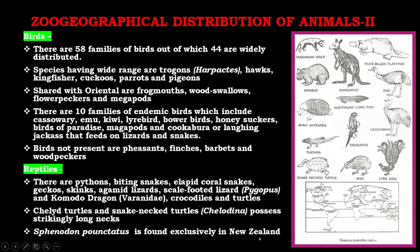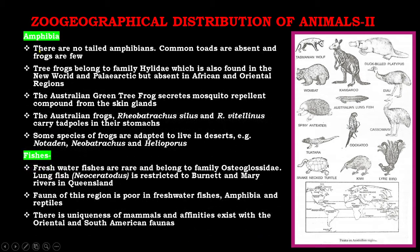For amphibia, there are no tailed amphibians; common toads are absent; and frogs are few. Tree frogs belong to family Hylidae, which is also found in the New World and Palearctic but absent in the African and Oriental region. The Australian green tree frog secretes a mosquito repellent compound from its skin glands. The Australian frogs Rheobatrachus silus and Rheobatrachus vitellinus carry tadpoles in their stomachs.